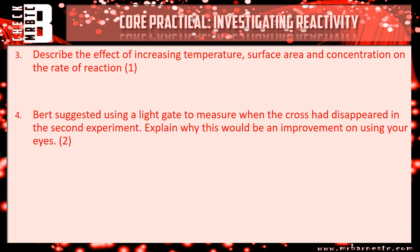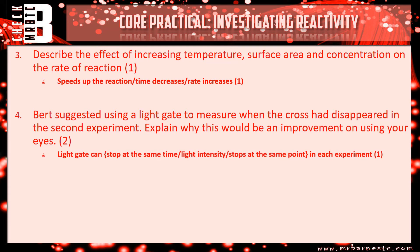For question three: if you increase temperature, surface area, or concentration, the rate of reaction will increase. You could have said it speeds up the reaction, time decreases, or the rate increases - any of those would have got your mark. For question four: Bert suggests using a light gate. A light gate will stop at the same light intensity at the same point in every experiment, therefore you reduce human error. Those are the two things that would have got you the two marks there.